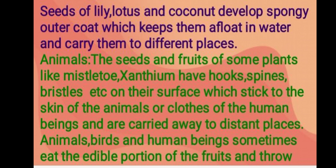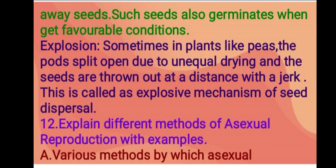Animals: the seeds and fruits of some plants like mistletoe and Xanthium have hooks, spines, and bristles on their surface which stick to the skin of animals or clothes of human beings and are carried to distant places. Animals, birds, and human beings sometimes eat the edible portion of fruits and throw away the seeds; such seeds also germinate under favorable conditions. Another method is explosion: in plants like peas, the pods split open due to unequal drying and seeds are thrown out with a jerk — this is called the explosive mechanism of seed dispersal.